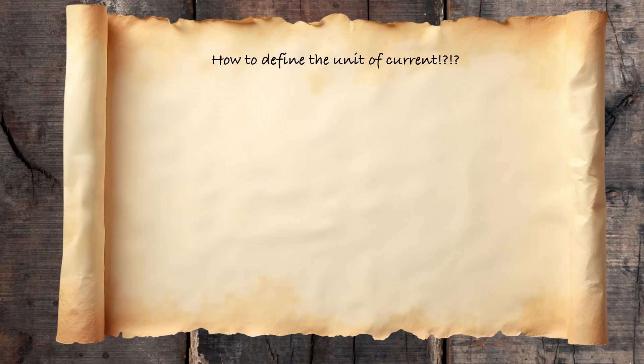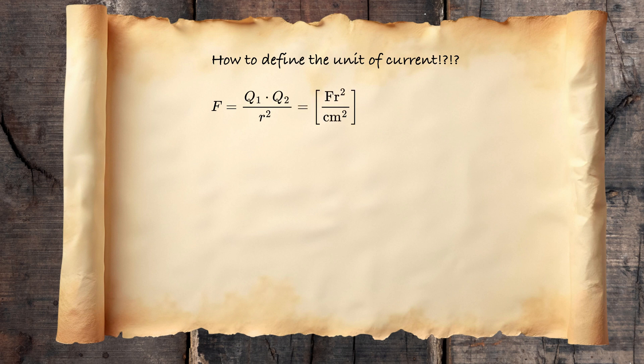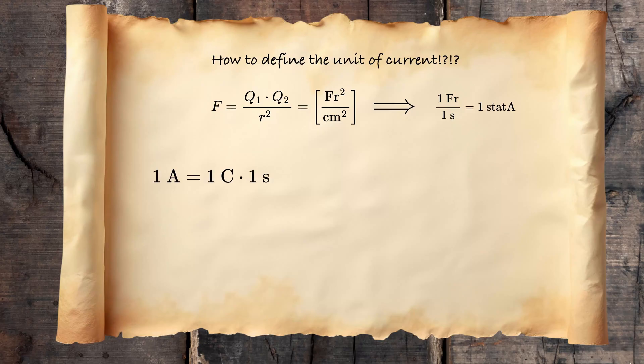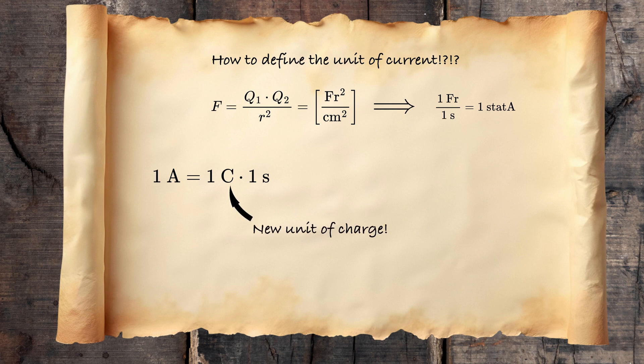Now we have two options. We can use the definition of charge as we know it from the Coulomb's law to define what the current is, which at this time seems completely crazy, because we have problems to measure charge of just one body, let alone a charge that is passing in a wire. Or we can somehow define the unit of current and then derive what the charge is.